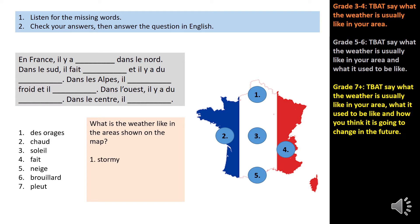Number one: dans le nord, il y a des orages — it's stormy. Number two: dans l'ouest, il y a du brouillard — in the west, it's foggy. Number three: dans le centre, il pleut — it's raining. Number four: dans les Alpes, il fait froid et il neige — in the Alps, it's cold and it's snowy. So you need to know a bit of geography there. And number five: dans le sud, il fait chaud et il y a du soleil — it's hot and it's sunny.